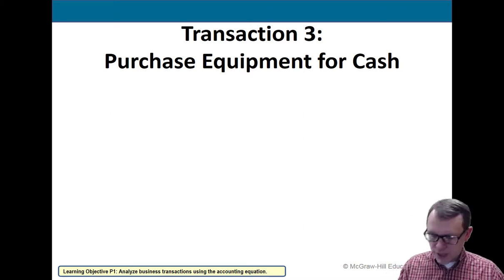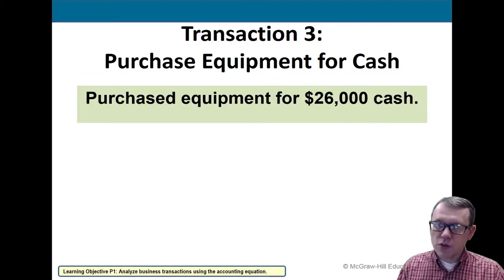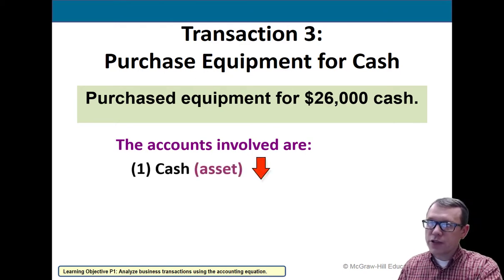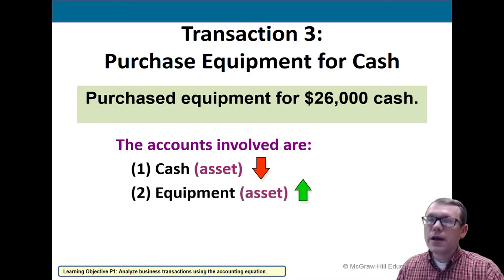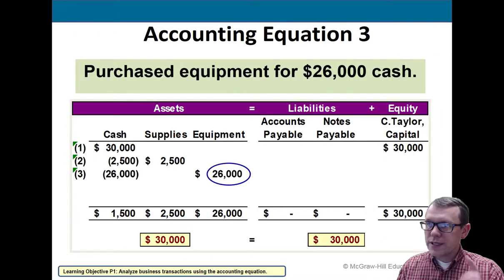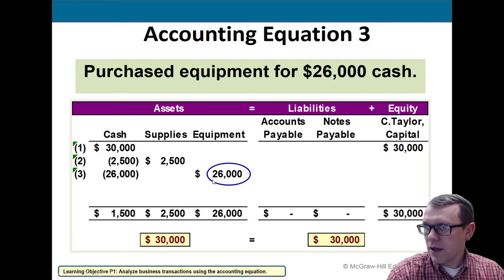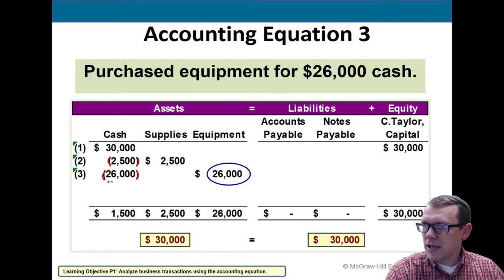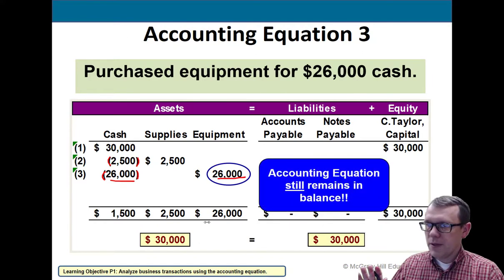Transaction number three: purchase equipment for cash. Equipment costs $26,000. Cash is going down — we're paying it out — and equipment, also an asset, is going up. In the accounting equation: $26,000 in cash is reduced (shown in brackets, which denote a negative number in accounting), and equipment increases by the same amount. We stay in balance. That's the important part — keeping the accounting equation in balance.